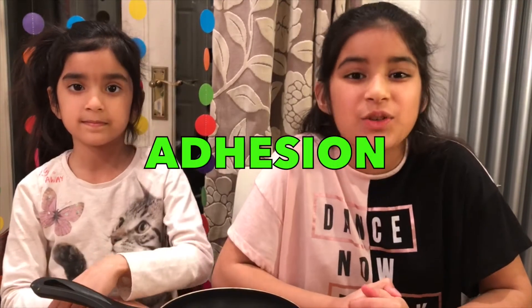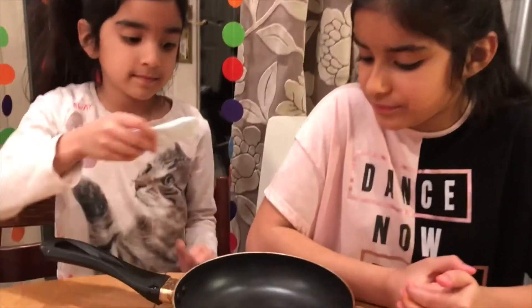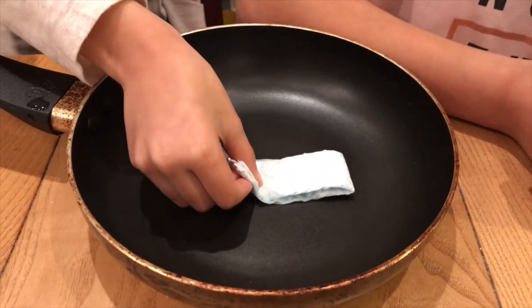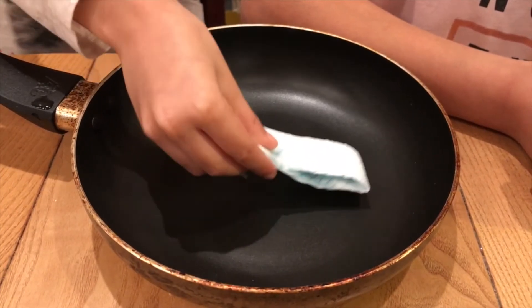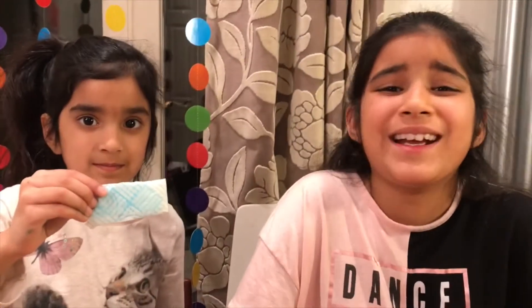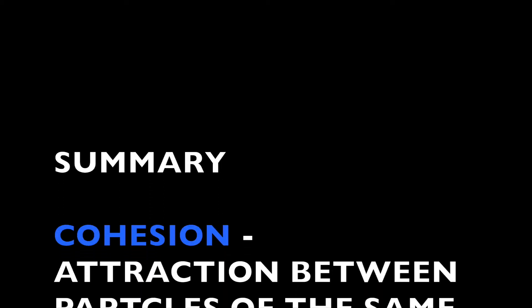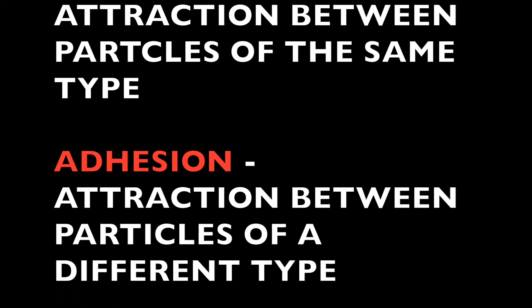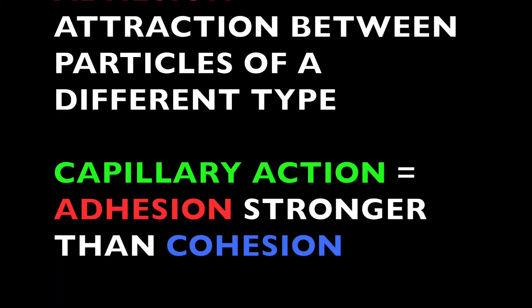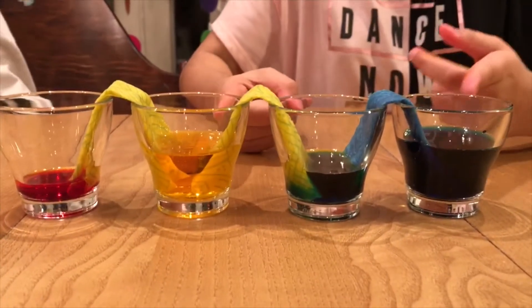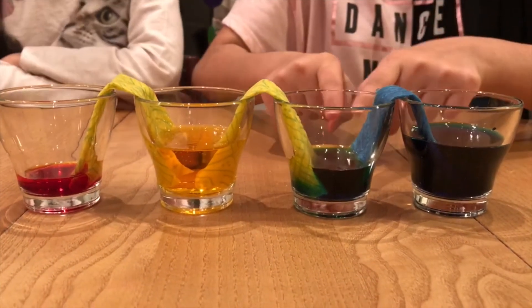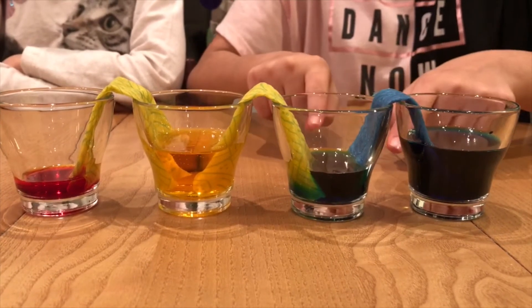Adhesion is the attraction between two different particles — for example, tissue and water. These two things have a very strong attraction. Let's see what's been going on while we've been talking. Well guys, these two colored waters have traveled through the tissue and made this color — and that is capillary action!